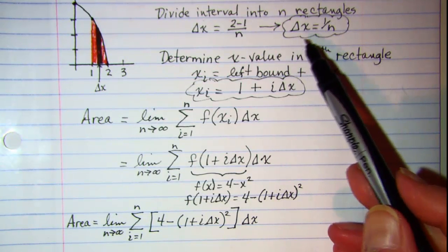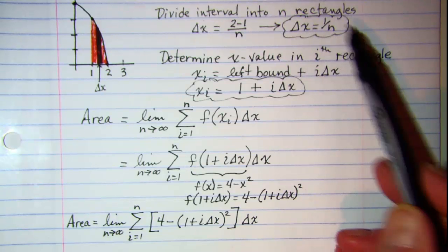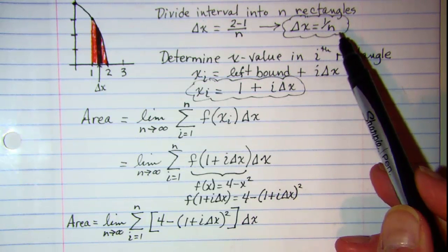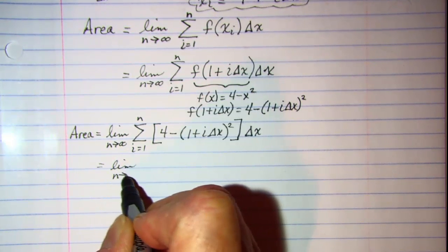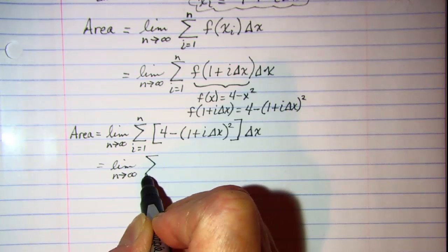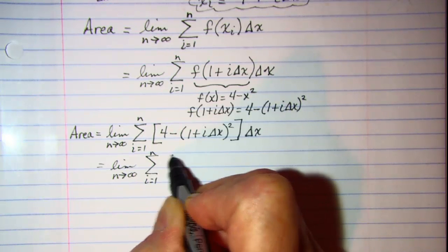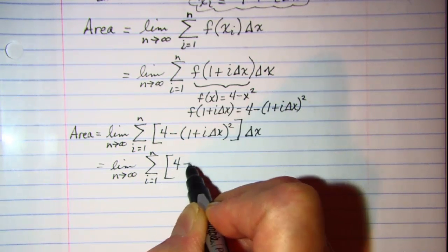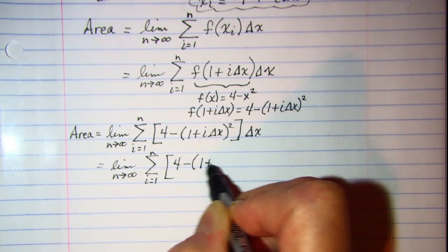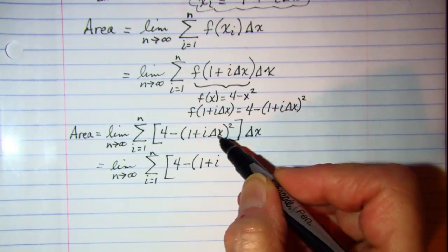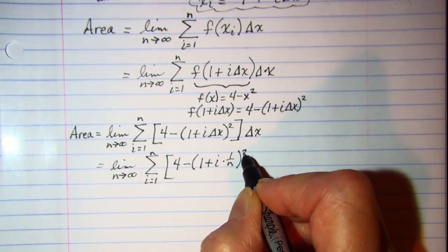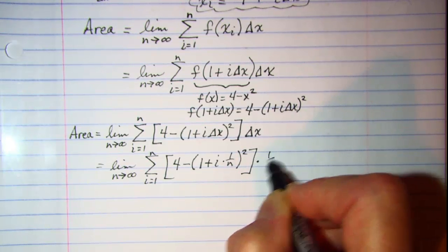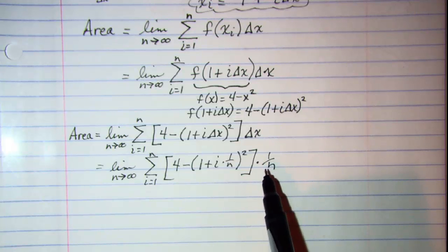We have one more substitution before applying summation formulas. Delta x is 1 over n. So this becomes the limit as n approaches infinity of the summation as i goes from 1 to n of 4 minus the quantity (1 plus i times 1 over n) squared, times 1 over n.